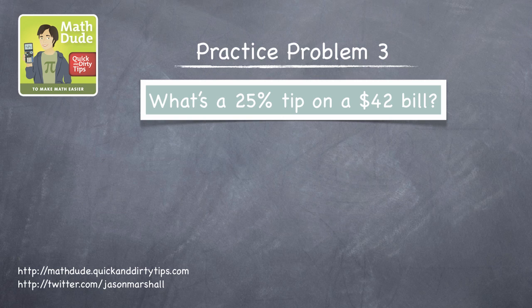The third practice problem asks you to calculate 25% on a $42 bill. We've only calculated 20% and 15% tips before, so how can we find 25%?